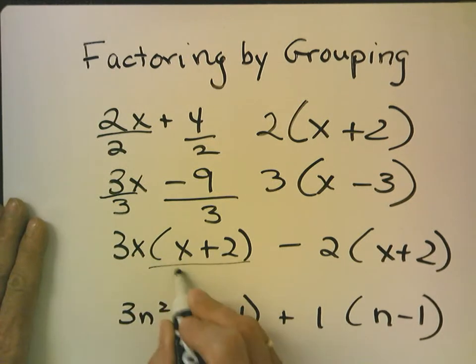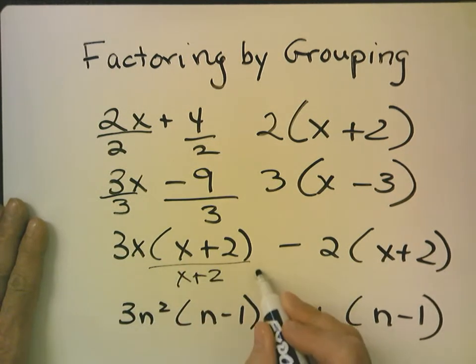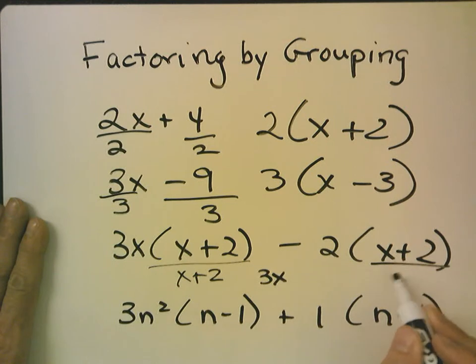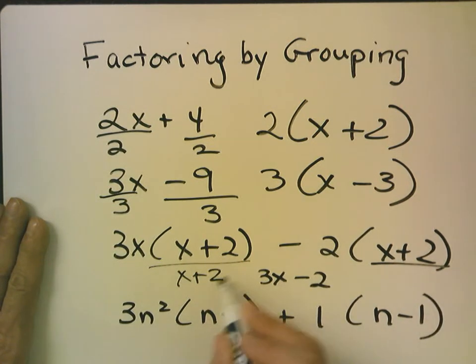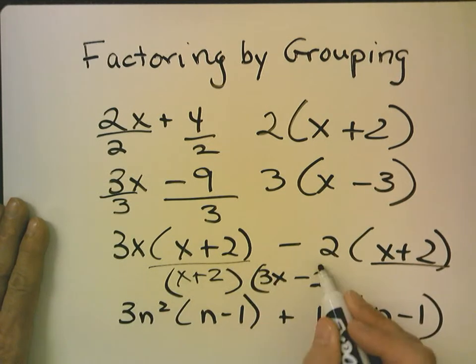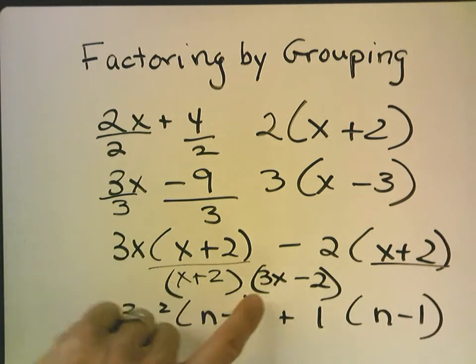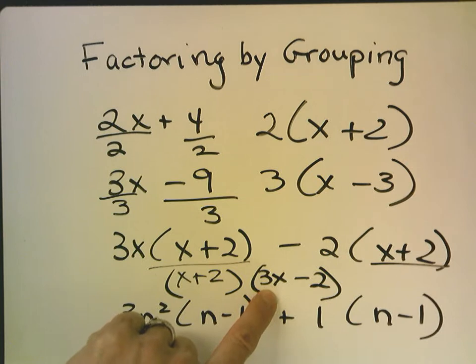So, if I divide this by x plus 2, I get 3x. And if I divide this by x plus 2, I get negative 2. So, I pull out the x plus 2, and I'm left with 3x minus 2.